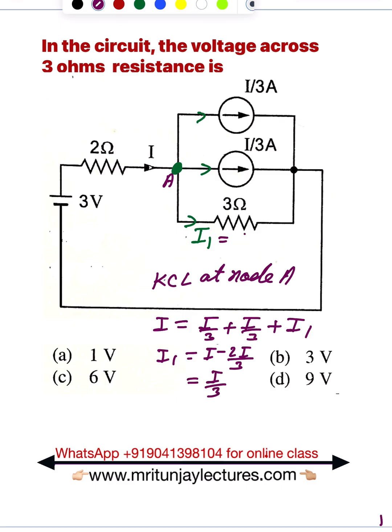So what about current in the 3-ohm resistance? That is I/3, clear.